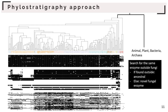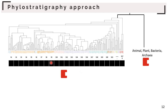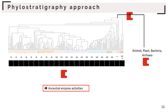The idea is to search which enzyme activity present in fungi is also found outside fungi — in animals, plants, bacteria, or archaea. If the same enzyme activity is found outside fungi, it is considered ancestral, assuming that horizontal gene transfer events are very rare. For example, if an enzyme activity is shared by all fungal species and also found outside fungi, this means it was already present at their last common ancestor. Therefore, these enzyme activities are ancestral.